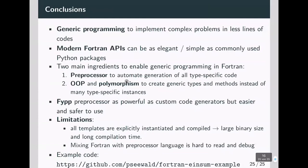Now to arrive at the conclusions, I hope I could convince you that generic programming is very helpful to implement complex problems in less lines of code. I want to point out that modern Fortran APIs can be as elegant or simple as commonly used Python packages. I mentioned two important ingredients to enable generic programming in Fortran, which is a preprocessor and object oriented programming.